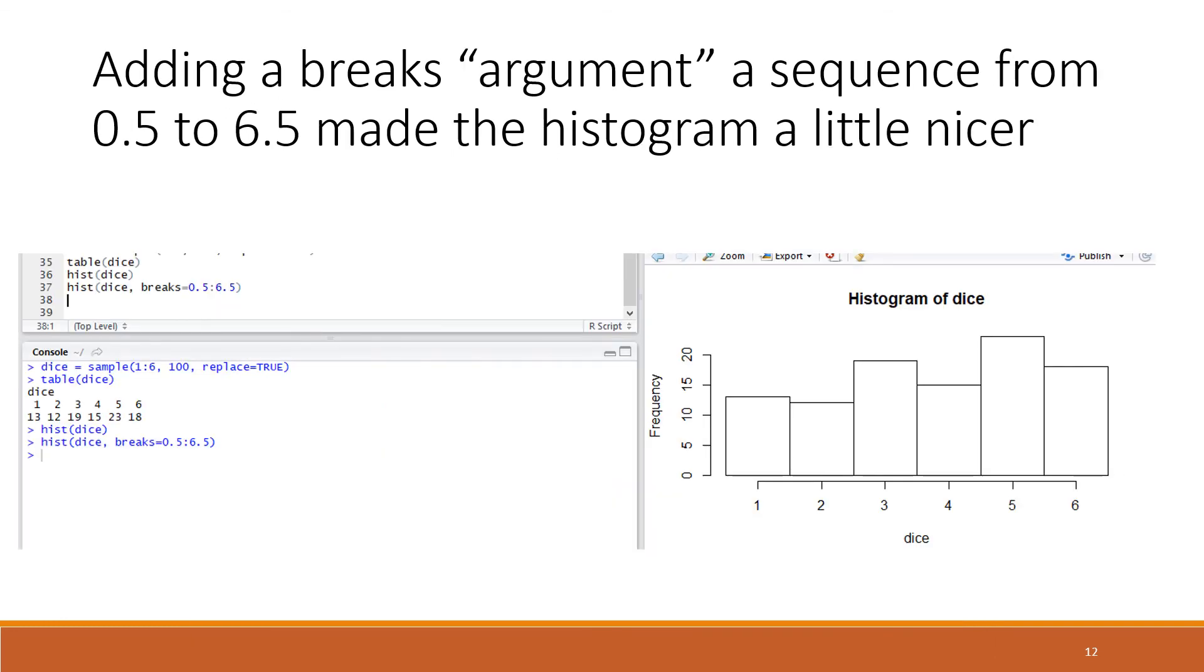To make a cleaner looking histogram, we've added a second argument called breaks. The possible outcomes were 1, 2, 3, 4, 5, 6. We've gone a little bit lower than the lowest value, so instead of 1 we're putting in 0.5, and instead of the highest value 6 we're putting in 6.5. We're making our breaks 0.5:6.5, and this gave us a nice distribution of the columns without any odd gaps.